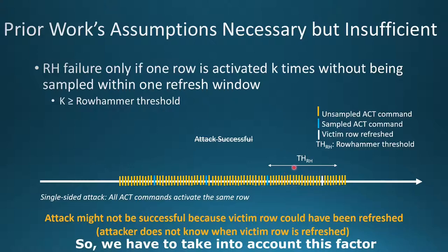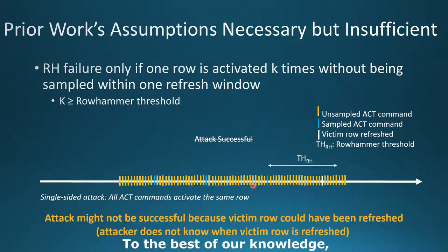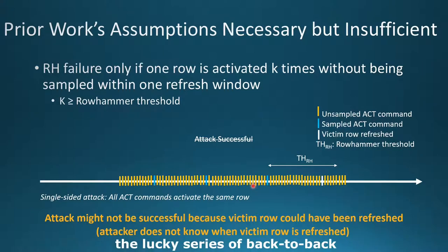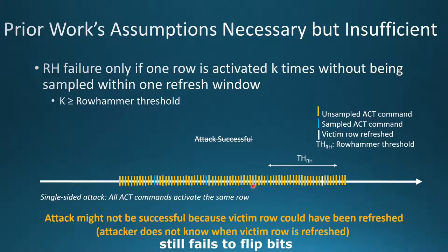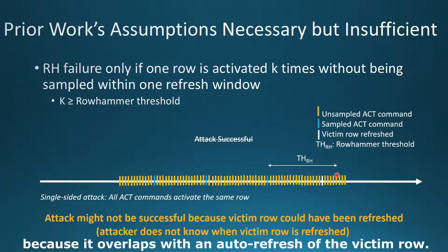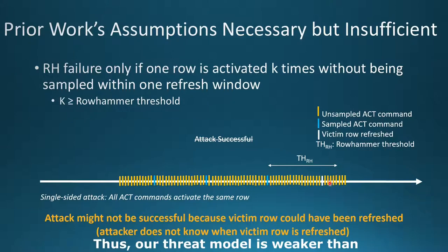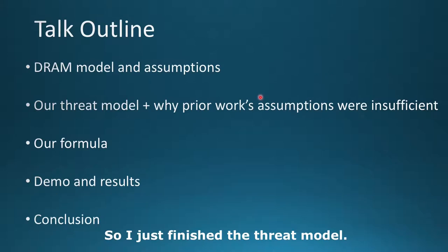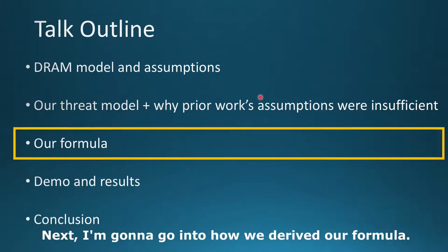To the best of our knowledge, an attacker doesn't have a way to infer or learn when a specific victim row is auto-refreshed. Thus the attacker cannot avoid the case where a lucky series of back-to-back unsampled row activations still fails to flip bits because it overlaps with an auto-refresh of the victim row. Thus our threat model is weaker than assumed by prior work, but is more realistic. Next I'm going to go into how we derive our formula.